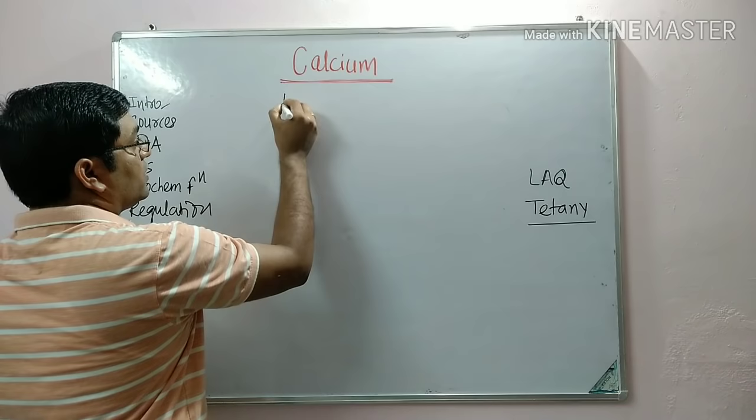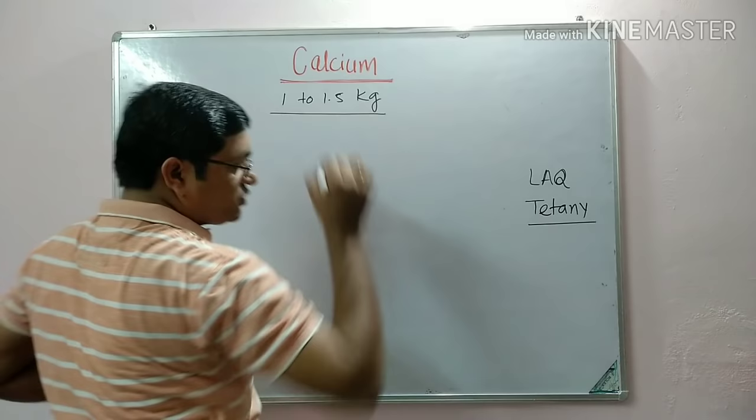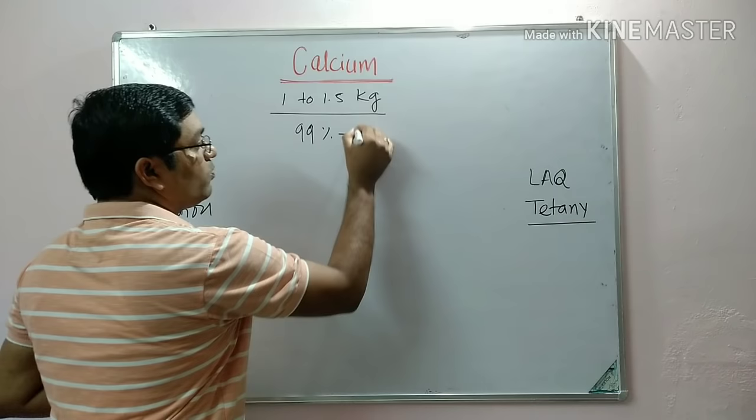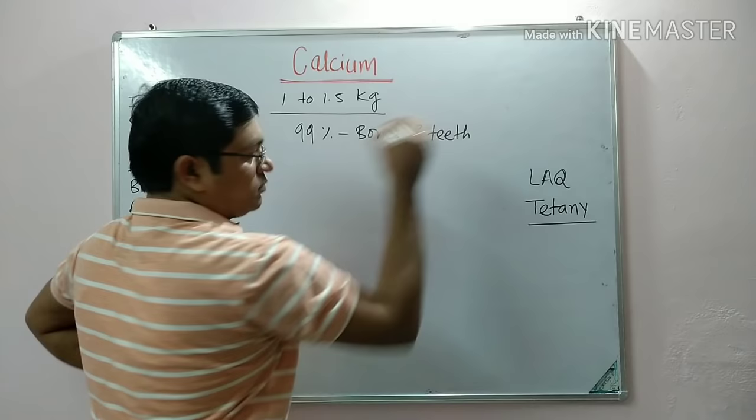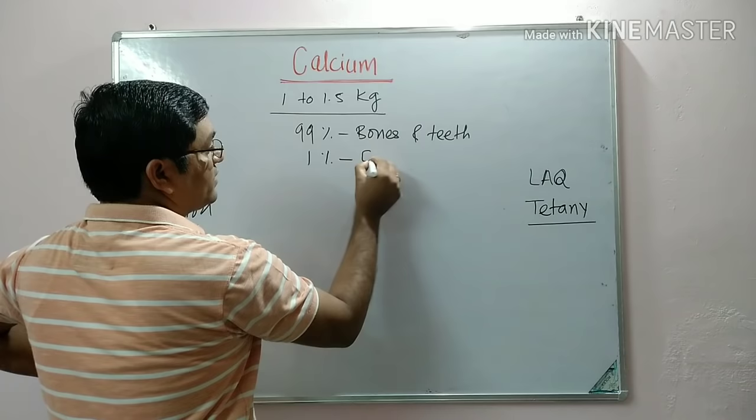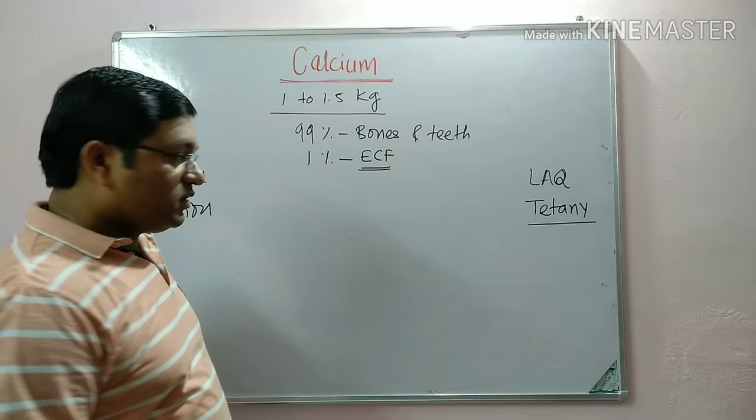Coming to the introduction of calcium: total body calcium is 1 to 1.5 kg. Of this total body content, 99% of calcium is found in bones and teeth, and the remaining 1% of calcium is in extracellular fluid, which is important for a number of functions in our body.